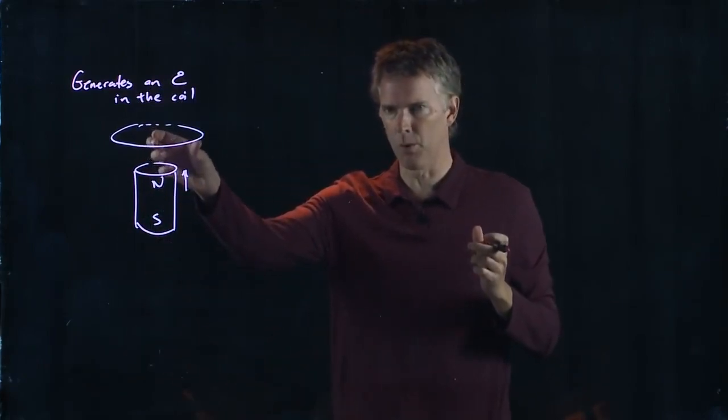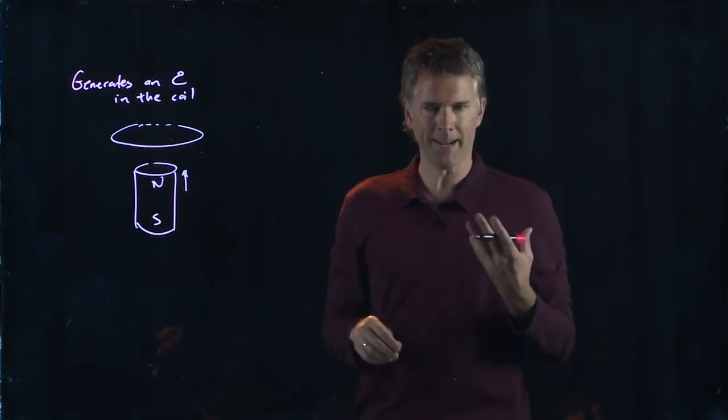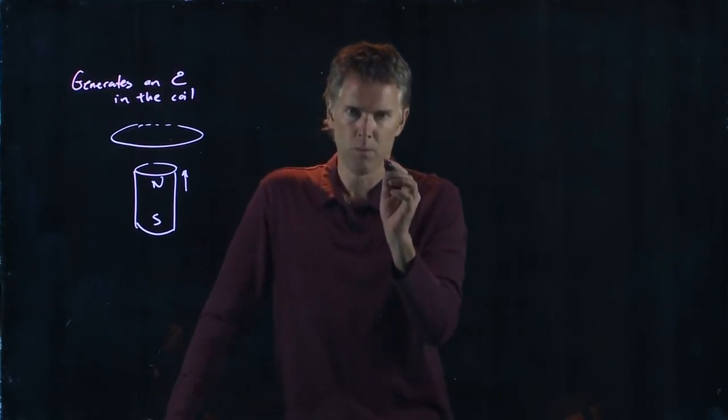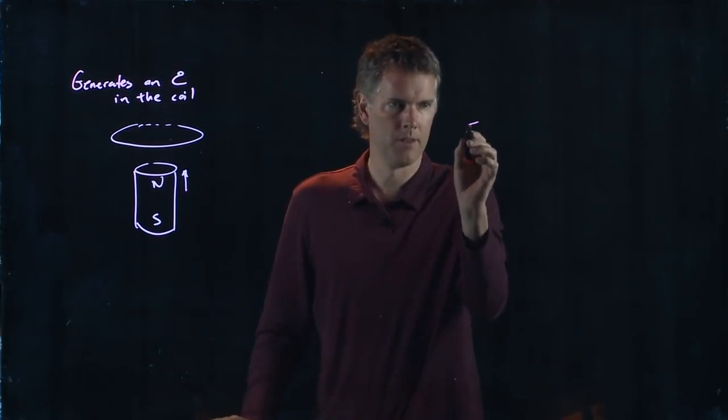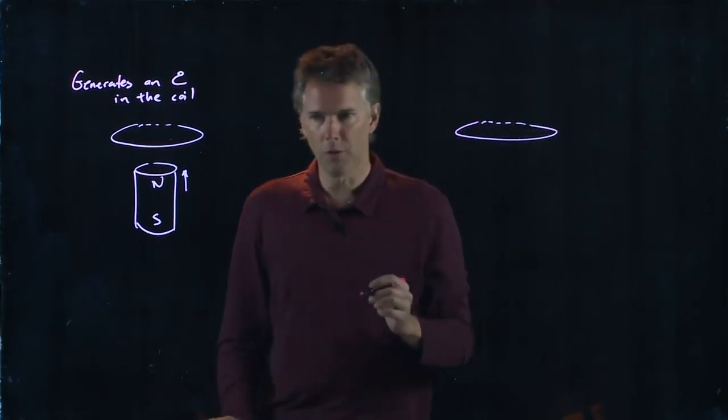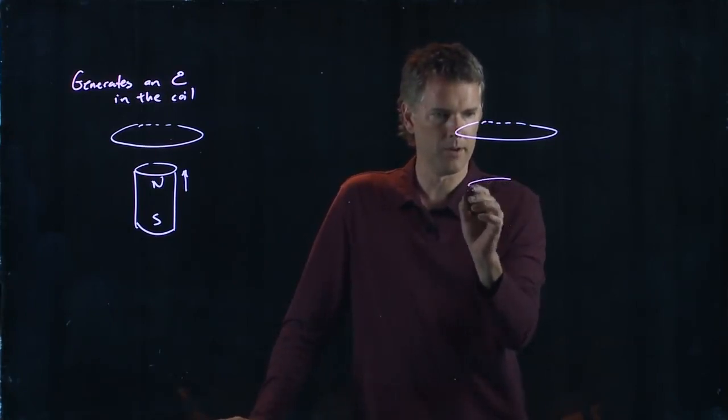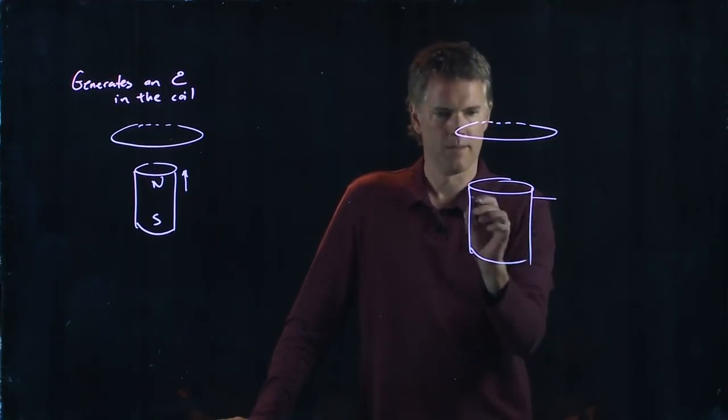But pushing the bar magnet towards the coil is really like increasing the strength of the magnetic field in the coil. So let's replace the bar magnet with a solenoid. Let's take a solenoid right here and we're going to run some current through the solenoid.